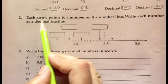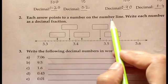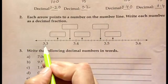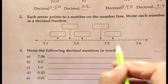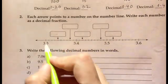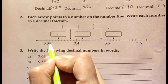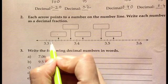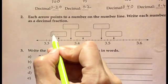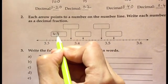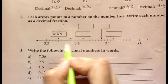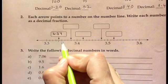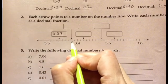Now the second question, each arrow points to the number on a number line, write each number as a decimal fraction. So this is 3.3, 3.4, 3.5, 3.6. So we have to write here. So it will be 3.31, 3.32, 3.34, 1, 2, 3 and 4. So we have 10 marks between them. This will be 1, 2, 3, 4, 5, 6, 7 and 8. So it will be 3.38.